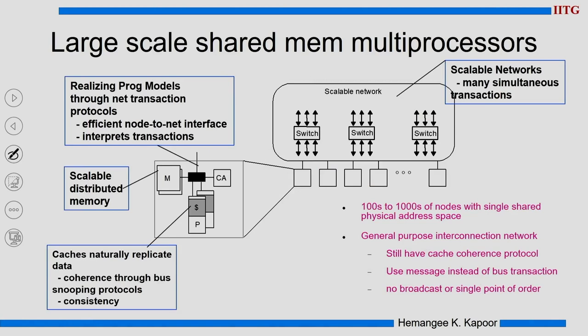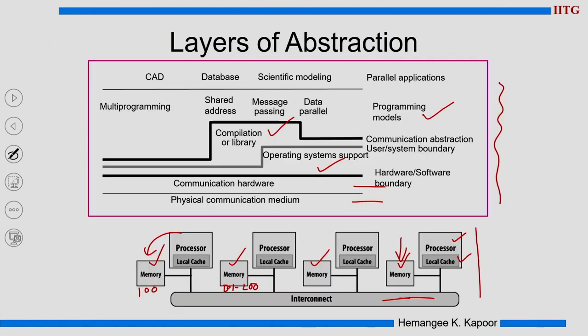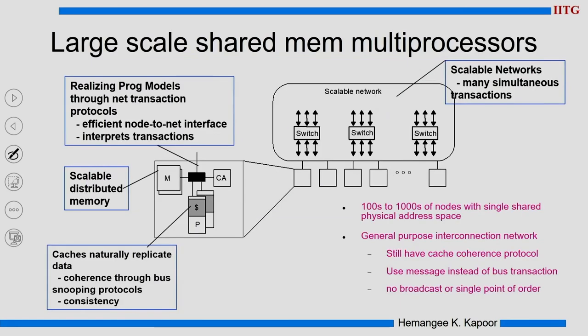If you zoom into the system where I have shown 4 processor nodes and the interconnect in a small box, that interconnect would become a very big scalable network which would itself be made up of several switches. It is not a single network or a single switch — it is made up of multiple switches, each switch connected to several nodes. So several nodes are connected to this scalable interconnect.